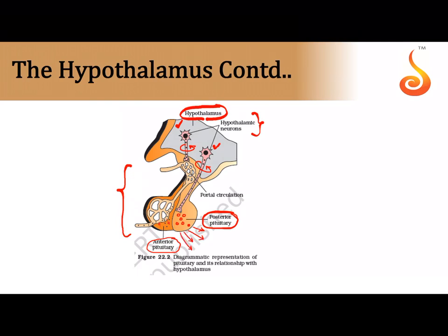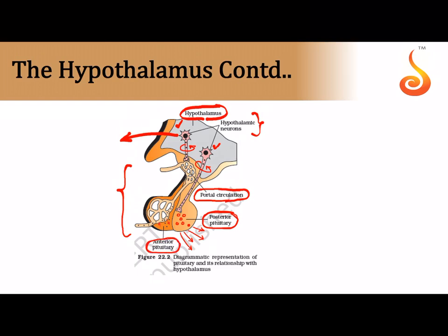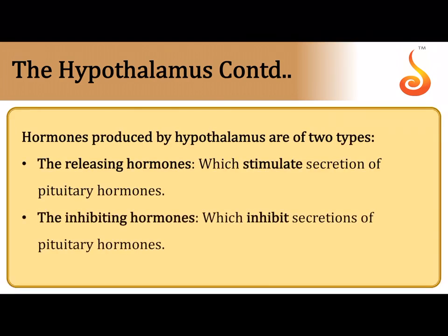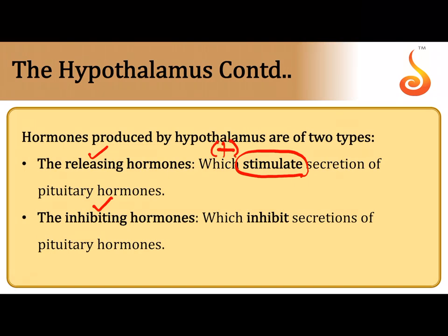Some neurosecretory cells pour their secretion into a capillary network called the portal circulation, which brings hormones to the anterior pituitary, whose cells then produce hormones. There is a portal circulation between the hypothalamus and the anterior pituitary, whereas hypothalamic neurons send axons directly to the posterior pituitary. Hormones released by the hypothalamus are classified into releasing hormones, which stimulate the pituitary gland, and inhibiting hormones, which suppress pituitary secretion.